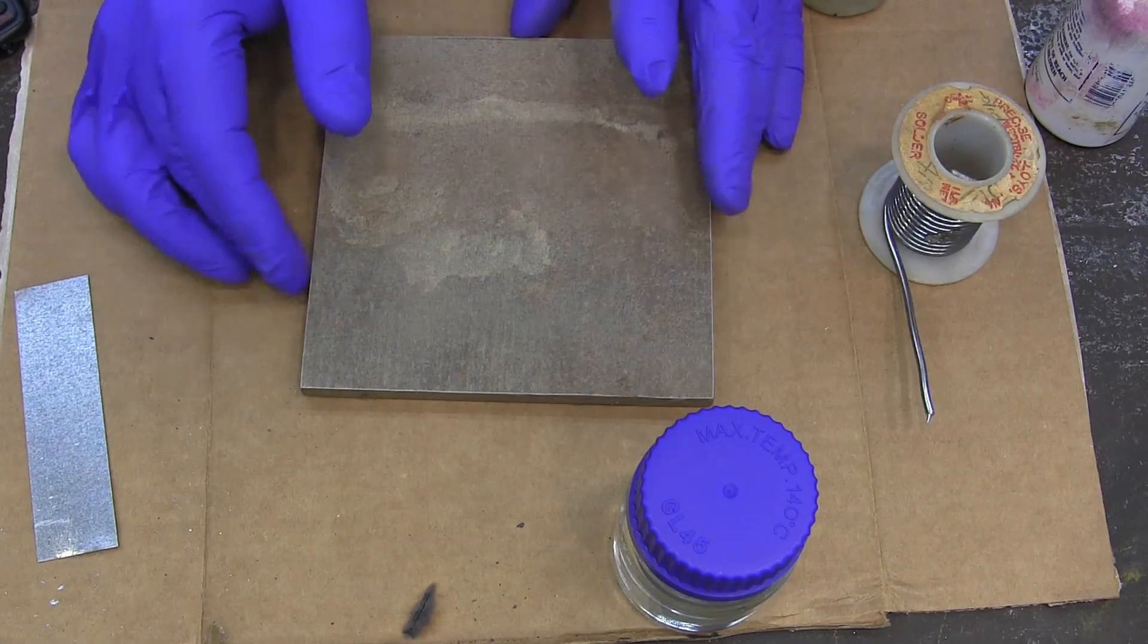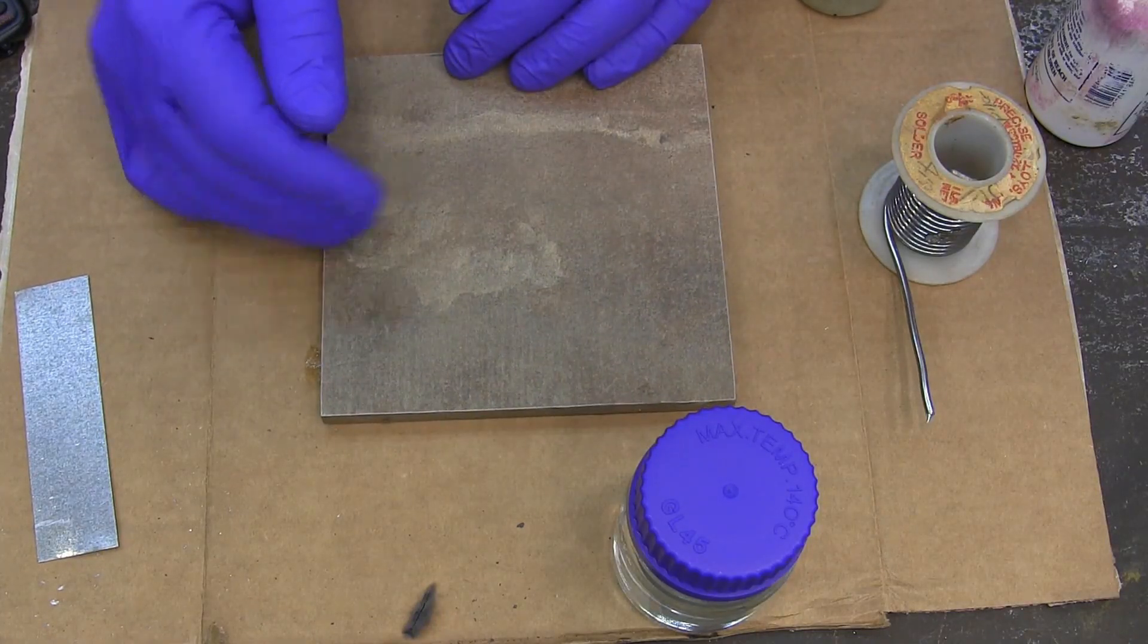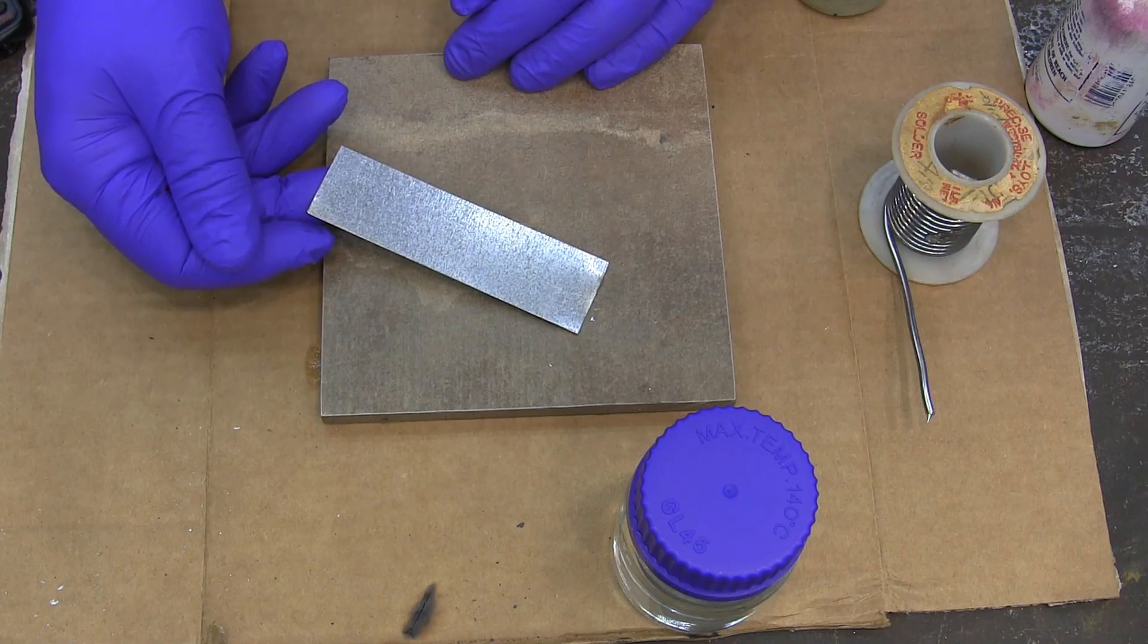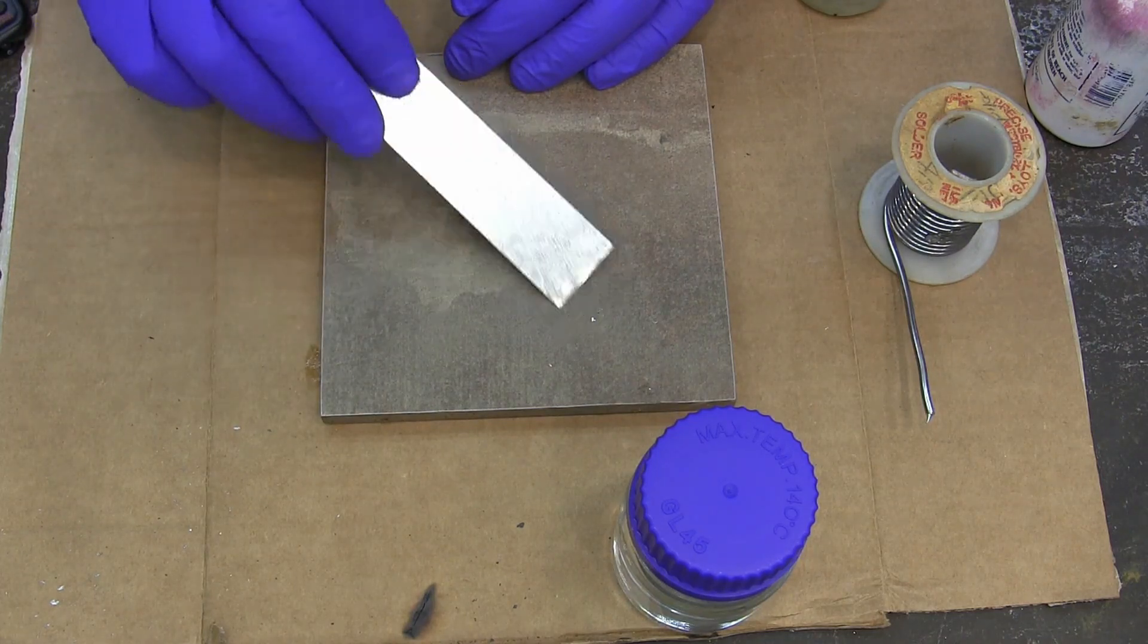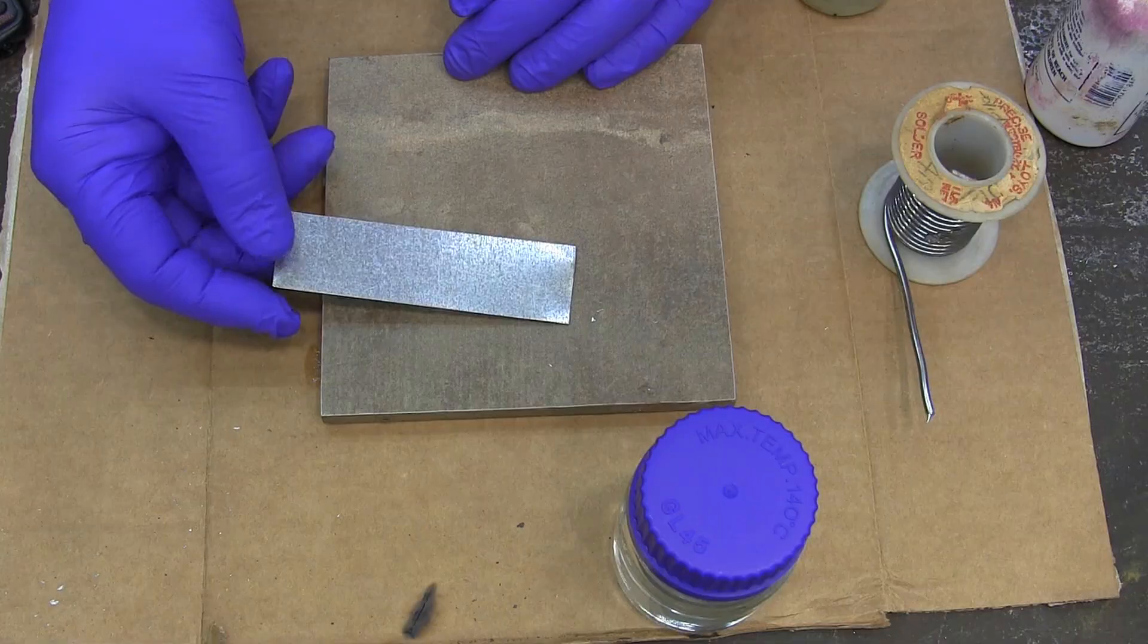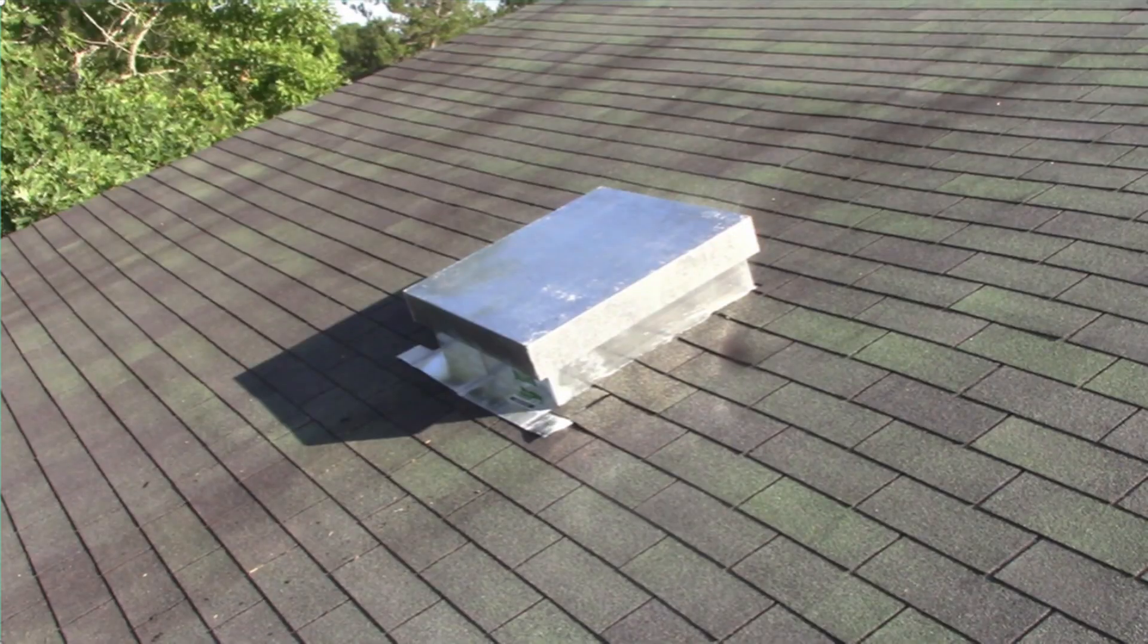I want to take a minute today to show you how to successfully solder galvanized steel. This is used a lot of times for flashing and just recently I made this hatch to put into my roof so that I could get up there without having to climb a ladder.